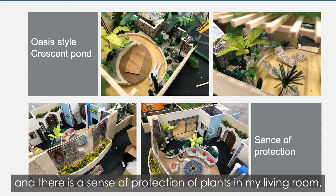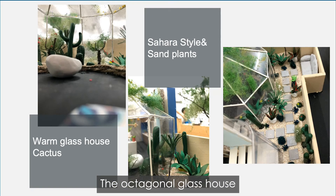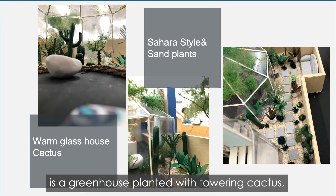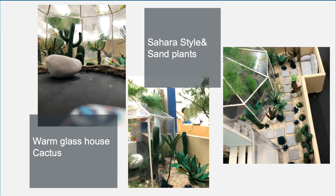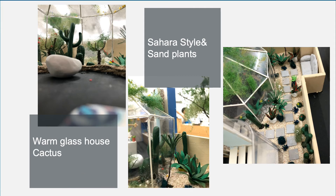The indoor living room is surrounded by planting. There is a sense of protection from the planting in my living room. The architecturally glass house is a greenhouse that I planted with towering cactus, and there are also soft branches with vine shedding.